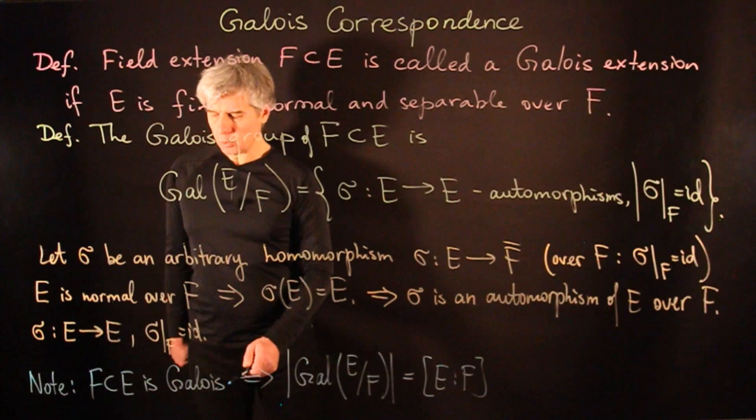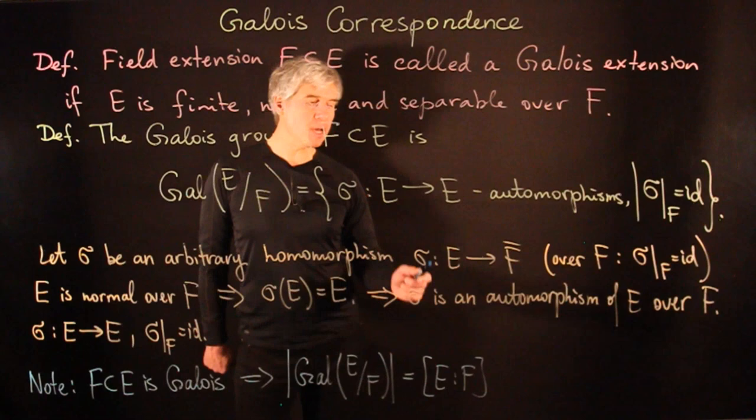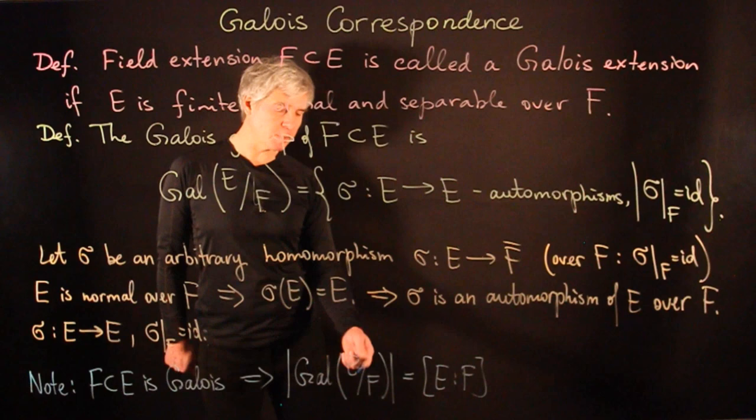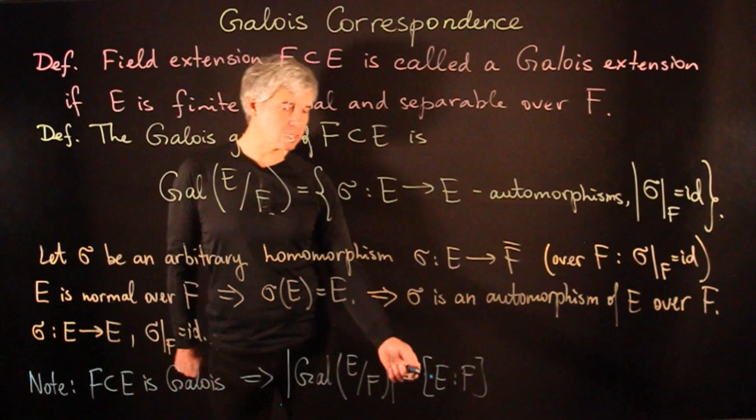Since this extension is Galois, it is separable. The degree of the extension is equal to the number of embeddings of E into F-bar. But each such embedding induces an automorphism of E, and thus an element of the Galois group. This gives us the equality that the order of the Galois group is equal to the degree of the extension.